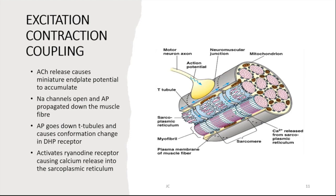Excitation-contraction coupling: acetylcholine release causes the miniature end plate potential to accumulate, sodium channels open, and the action potential propagates down the muscle fiber. The action potential travels into the T-tubules, causing a conformational change in the dihydropyridine receptor, which in turn activates the ryanodine receptor, causing calcium release from the sarcoplasmic reticulum.